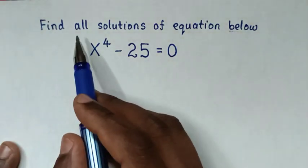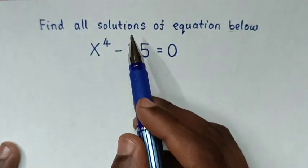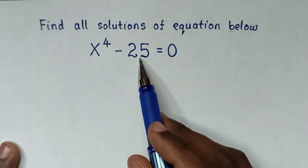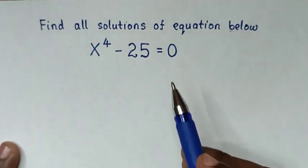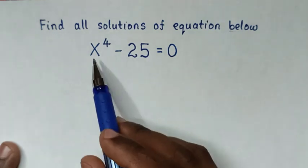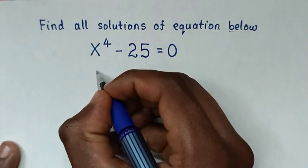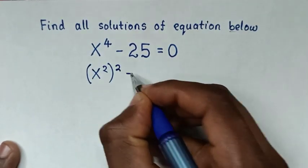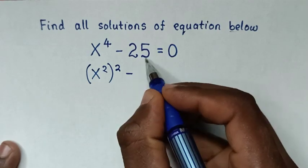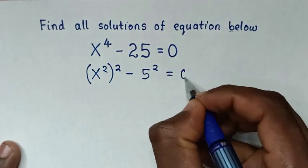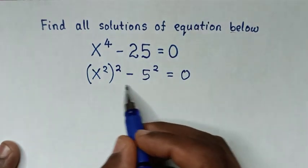Hello. How to find all solutions of the equation x⁴ - 25 = 0. From here, on the left side we rewrite in the form of a perfect square: x⁴ is (x²)², and 25 is 5², so we have (x²)² - 5² = 0.